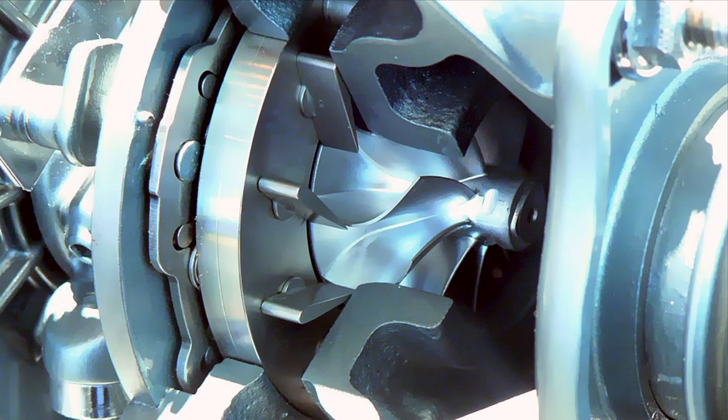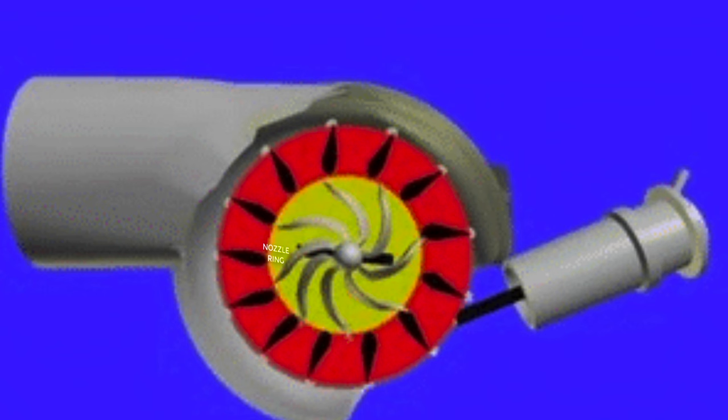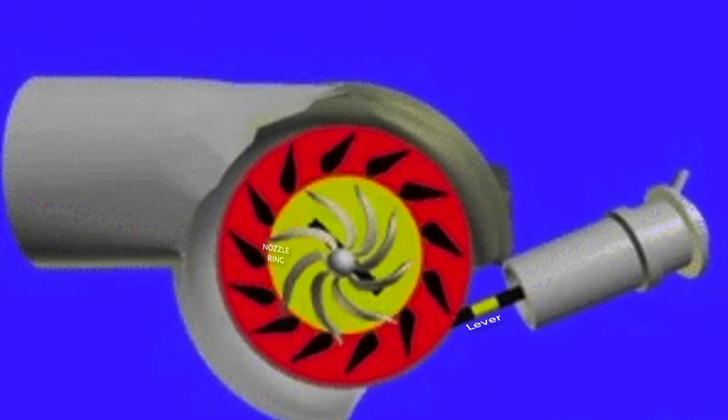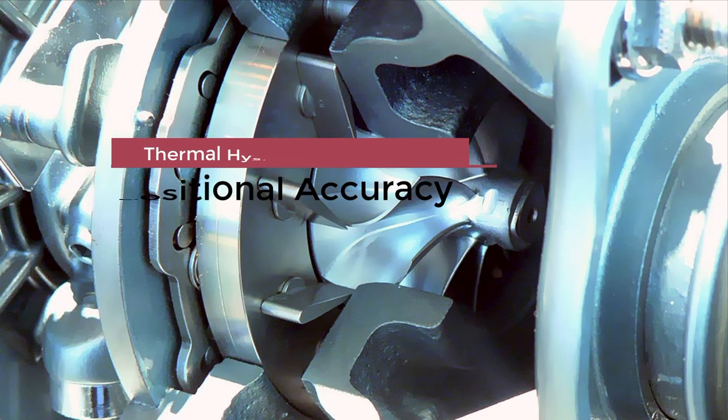The VGT or VTA consists of nozzle rings which are equipped with adjustable angle changing vanes. Each vane is connected to control ring using a lever which reduces the thermal hysteresis and increases the positional accuracy.